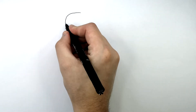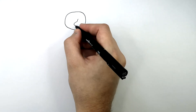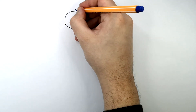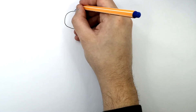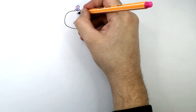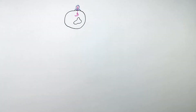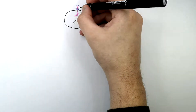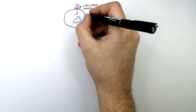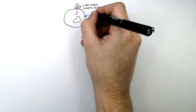This here is a cell, and this here represents the host's DNA. The Lytic Pathway begins with a virus binding onto the surface of a cell. The virus then injects its genetic material into the host cell.